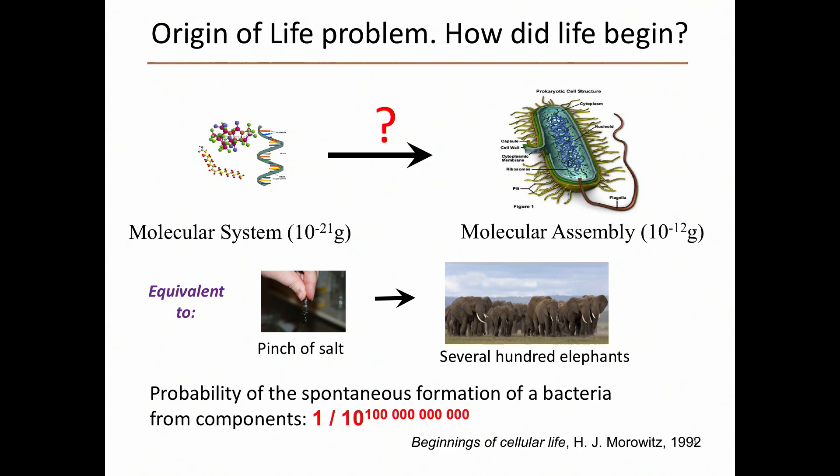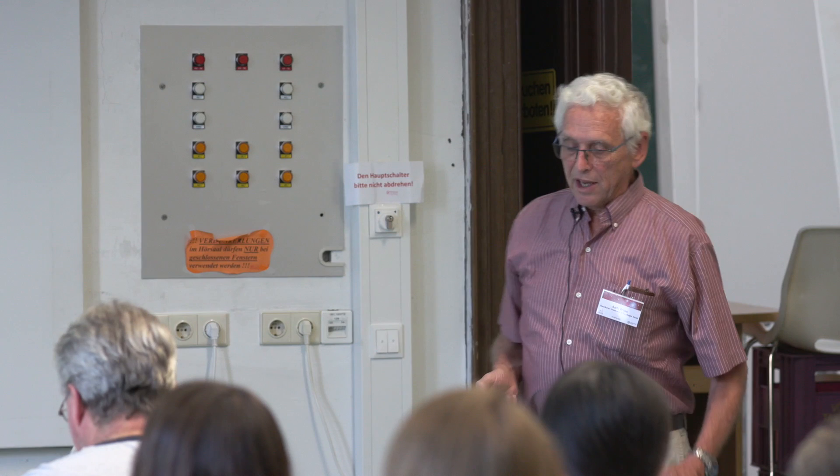The probability of the spontaneous formation of a bacterium from its components — just happening by chance — has been estimated by a well-known biologist, Harold Morowitz, as one in ten to the hundred billion. That number is so big that we can't even imagine how big it is, and we'll see a little bit more about the meaning of that number further along.